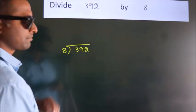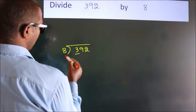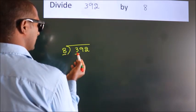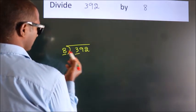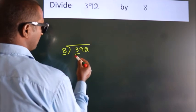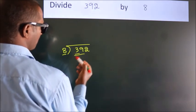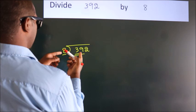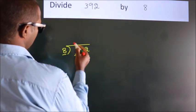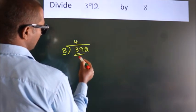Next, here we have 3. Here, 8. 3 is smaller than 8, so we should take 2 numbers: 39. A number close to 39 in the 8 table is 8 times 4, which is 32.